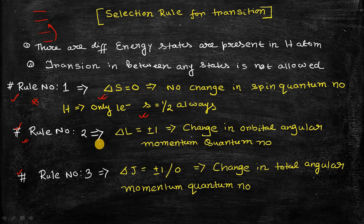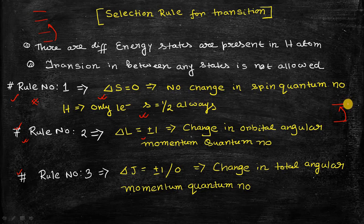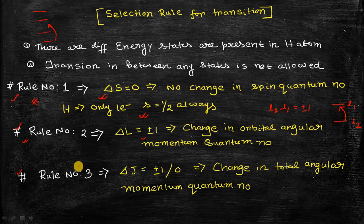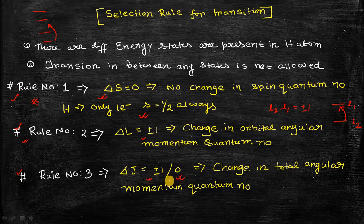The second selection rule is delta L equals plus or minus one — the change in the orbital angular momentum quantum number must be ±1. For a transition between two energy states with orbital quantum numbers L1 and L2, the value L2 minus L1 must equal plus or minus one; otherwise the transition is forbidden. The third rule is that delta J, the change in the total angular momentum quantum number, must equal plus or minus one, or zero. All three rules must be satisfied for a transition to be allowed.